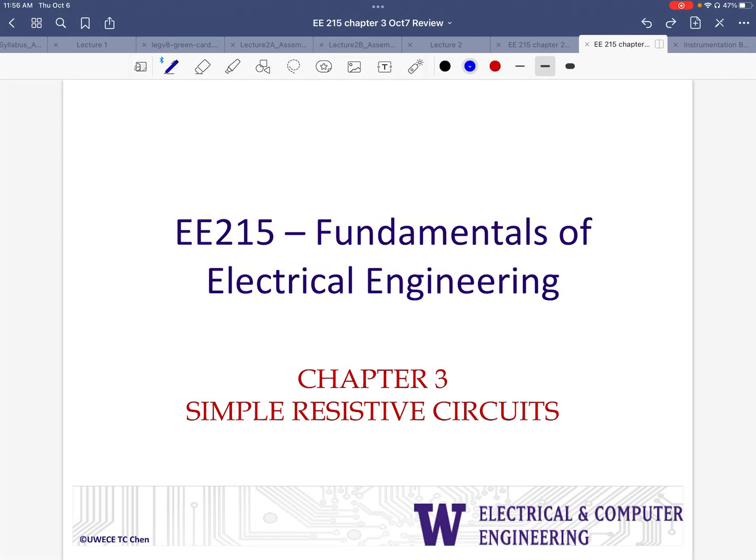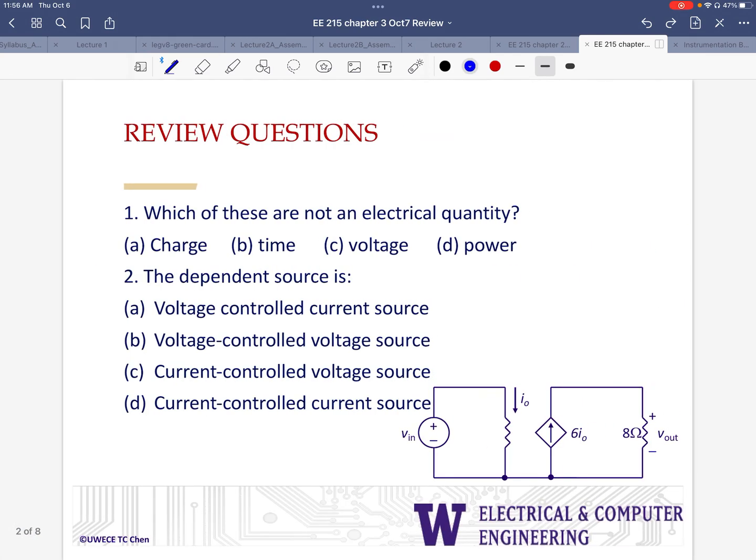In this video, we'll take a look at some review questions before we start talking about chapter 3 material. As always, feel free to pause and answer the question yourself to make sure that you got it right. The first question is, which of these are not an electrical quantity? I know that charge is one, voltage is also an electrical quantity, as is power, and so is current. But time is not an electrical quantity.